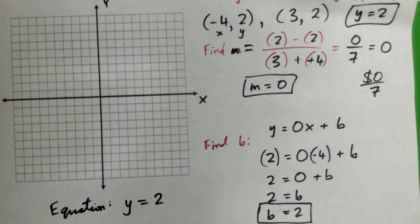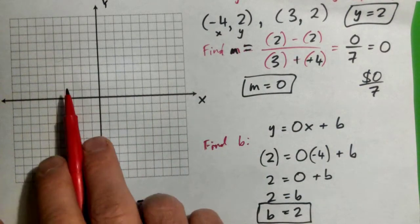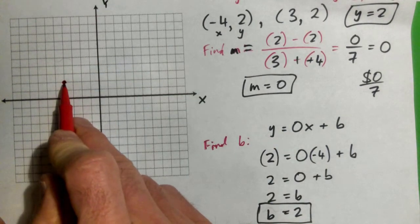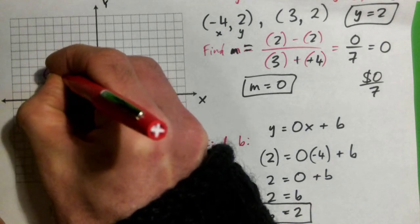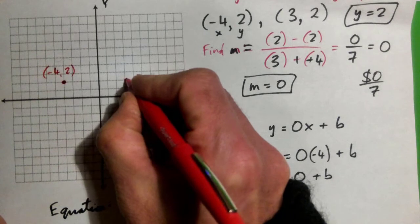Now what does that actually mean? Well, we have these points. x is -4, y is 2. That's that point there, isn't it? -4, 2, right? And the other one is 3, 2, and that's here. This is 3, 2.